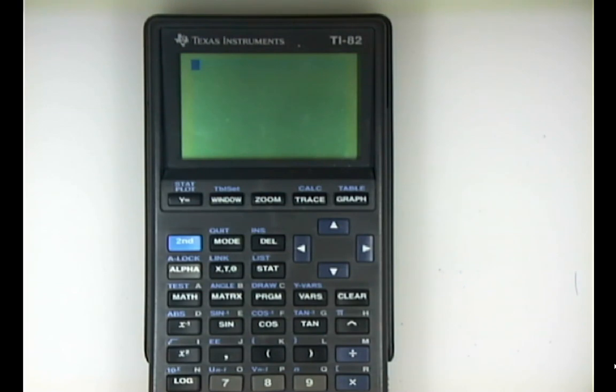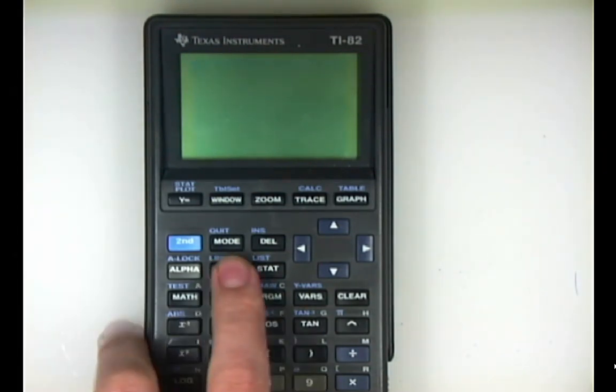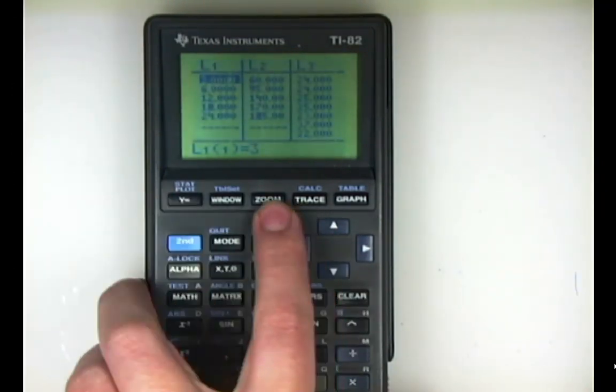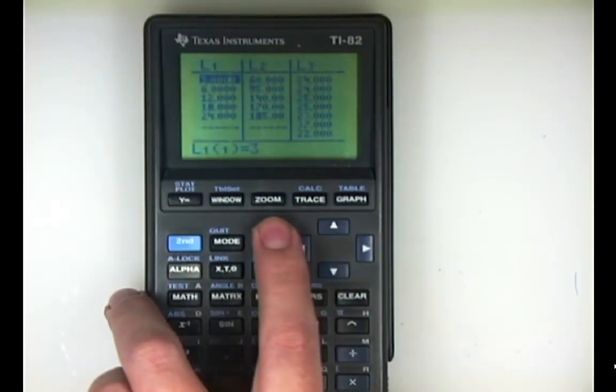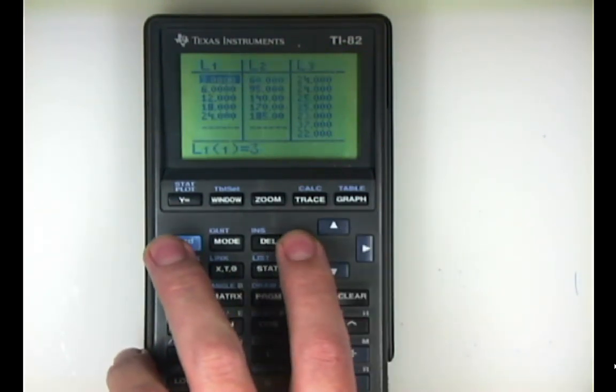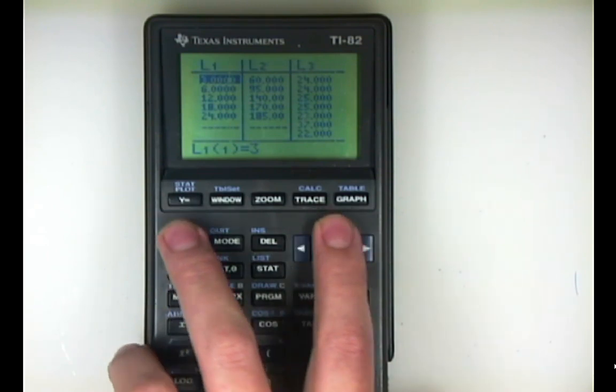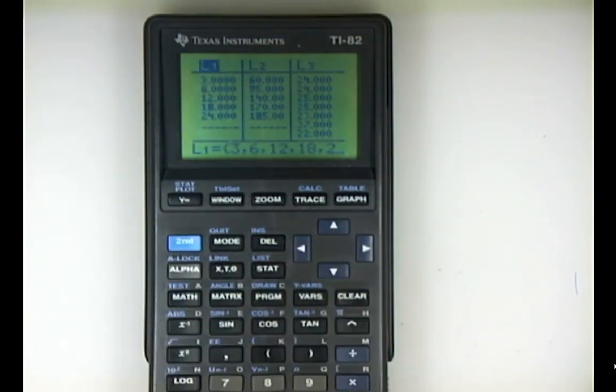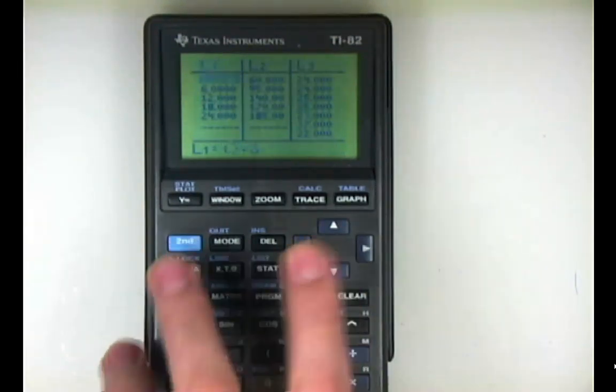You would press the STAT menu and go into Edit to edit your list. I've entered some data into both list one and list two so I can show you regression analysis as well. If you need to clear a list, you would simply highlight the list and press clear and then enter.